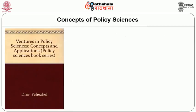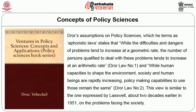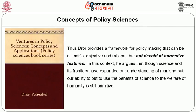Dror's assumptions on policy sciences, which he terms as euphoristic laws, state that while the difficulties and dangers of problems tend to increase at a dramatic rate, the number of persons qualified to deal with these problems tends to increase at an automatic rate. While human capacities to shape the environment, society, and human beings are rapidly increasing, policy making capabilities to use those remain the same. This view is similar to the one expressed by Laswell about two decades earlier in 1951 regarding the problems facing society. Dror provides a framework for policy making that can be scientific, objective, and rational, but not devoid of normative features. He explains that though science and its frontiers have expanded, our understanding of mankind and how to put the benefits of science to the welfare of humanity is still primitive.